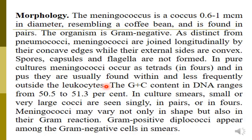Neisseria — either meningitidis or gonorrhoeae — are intracellular organisms. They are located intracellularly inside the polymorphonuclear leucocytes. The guanine plus cytosine content in the DNA ranges from 50.5 to 51.3 percent. In culture smears, they appear as small or very large cocci, seen singly, in pairs, or in tetrads.